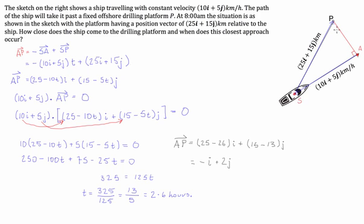Now to find out the distance that the ship is going to be away from the platform, we have to get the magnitude of AP. So the magnitude of AP is equal to, now we just use Pythagoras here, the square root of negative 1 squared plus 2 squared, and that is equal to the square root of 5. That's going to be in kilometers.